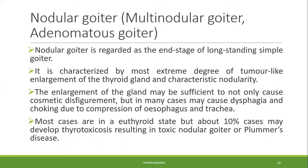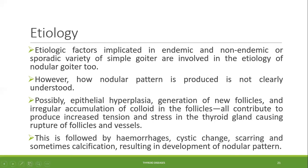Most cases of nodular goiter are in a euthyroid state, but about 10 percent of cases may develop thyrotoxicosis. Unlike simple goiter — where hyperthyroidism is never present — in nodular goiter a hyperthyroid state can be present, resulting in toxic nodular goiter or Plummer's disease. The etiologic factors for simple goiter are also involved in the etiology of nodular goiter, since it is an extension of untreated simple goiter.